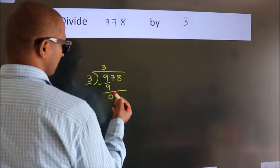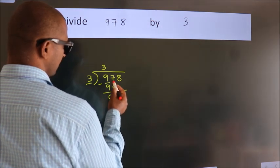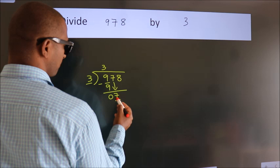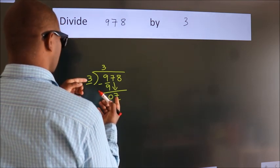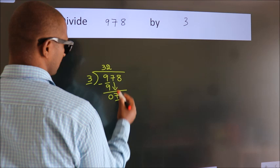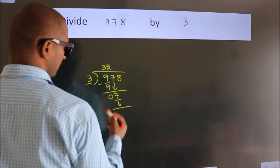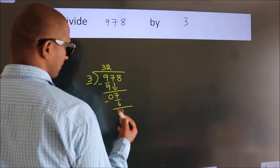After this, bring down the beside number. So 7 down. A number close to 7 in the 3 table is 3 × 2 = 6. Now we subtract. We get 1.